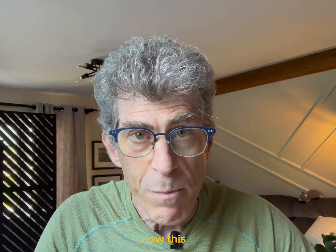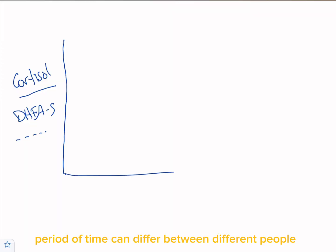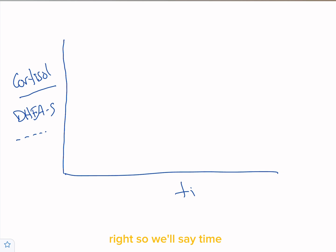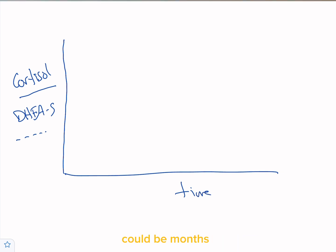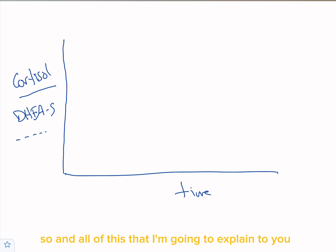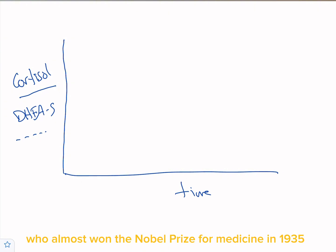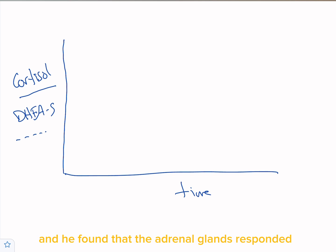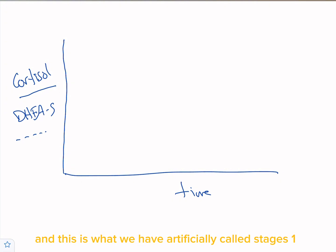This period of time can differ between people — could be days with a series of excessive stressors, could be months, but typically it's more months to years. All of this is based on work by a doctor named Hans Selye, who almost won the Nobel Prize for Medicine in 1935. He was an Austrian or Hungarian physician who found that the adrenal glands responded in basically three different phases to stressors — what we've artificially called stages one, two, and three.